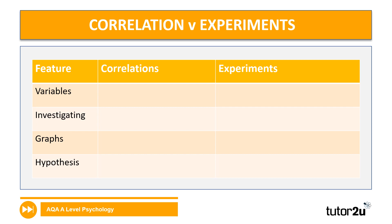To clarify the difference between correlations and experiments, there's a table in your booklet next to question seven. It covers some main features: variables, what's being investigated, what kind of graph is going to be used, and what the purpose of the hypothesis is for each of them. Pause the video here and have a go at filling in as much of that table as you can.